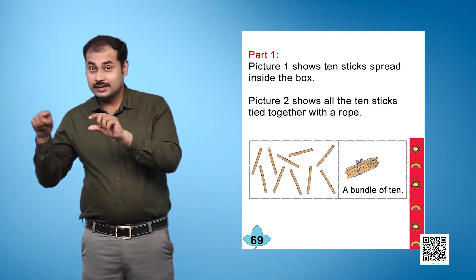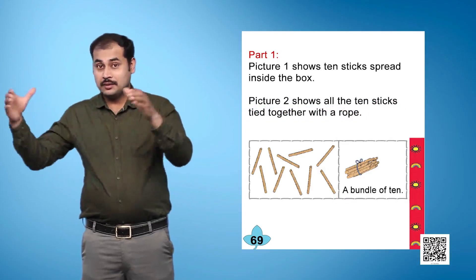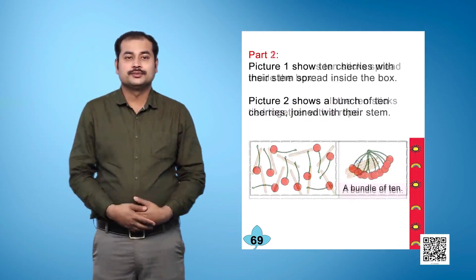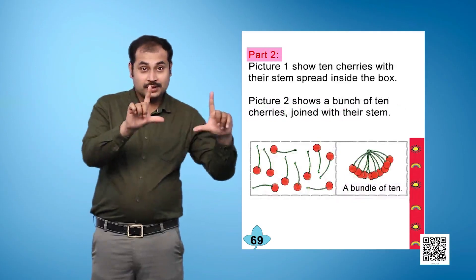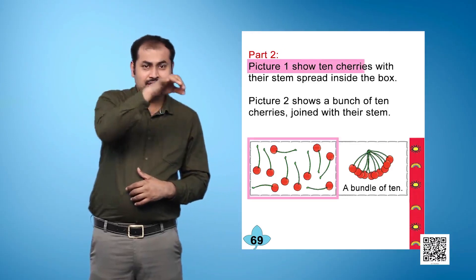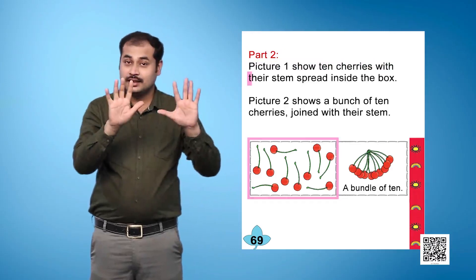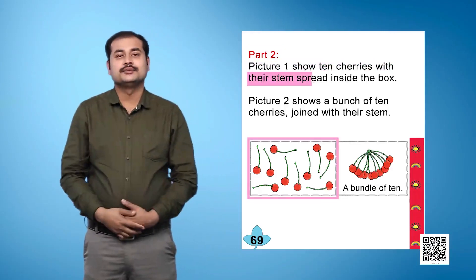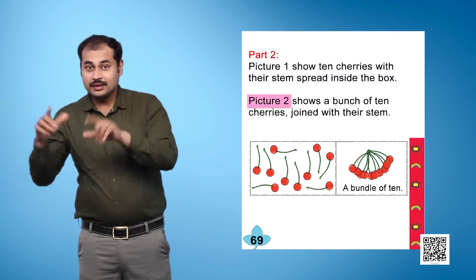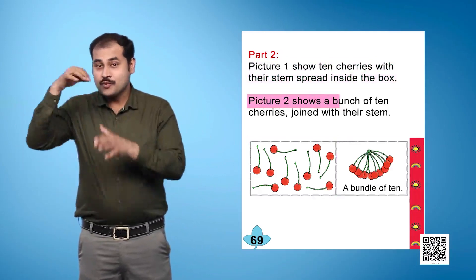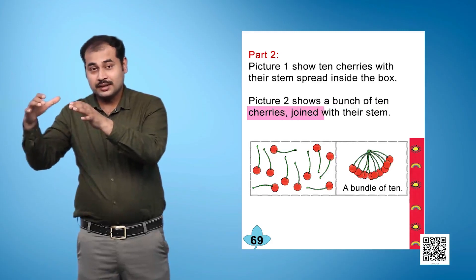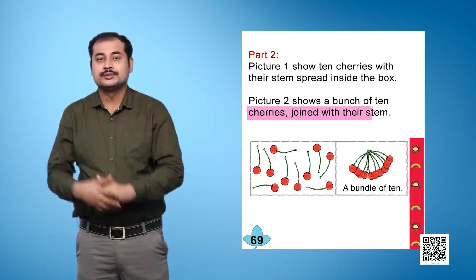Part 1 Text: A bundle of 10. Part 2, Picture 1 shows 10 cherries with their stems spread inside the box. Picture 2 shows a bunch of 10 cherries joined with their stem.